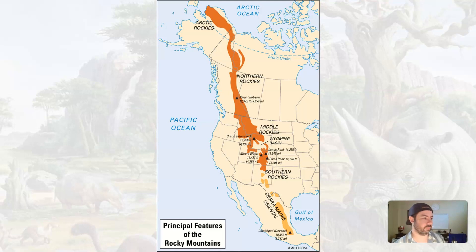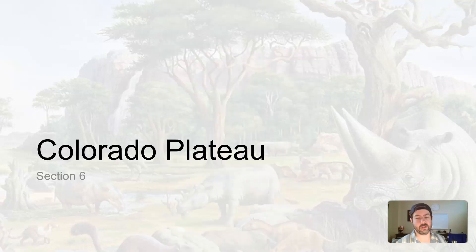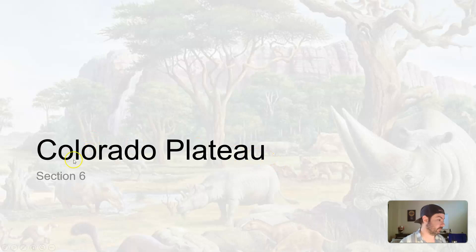During the Cenozoic, the Rockies are finally coming into fruition. In conjunction with what had been going on in the same area, when we come back we'll talk about the Colorado Plateau.